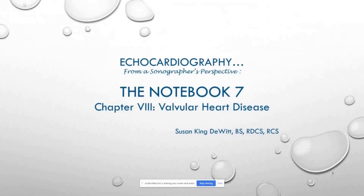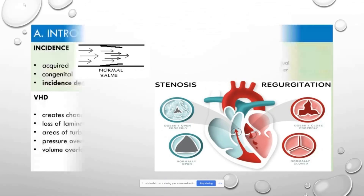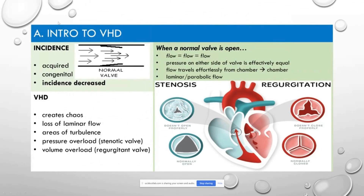We're starting Chapter 8, which covers valvular heart diseases. We're going to talk about them in general and then individually. When we talk about valvular heart disease, it can be acquired or congenital. Over time the incidence has decreased because of technological advancements and antibiotics.